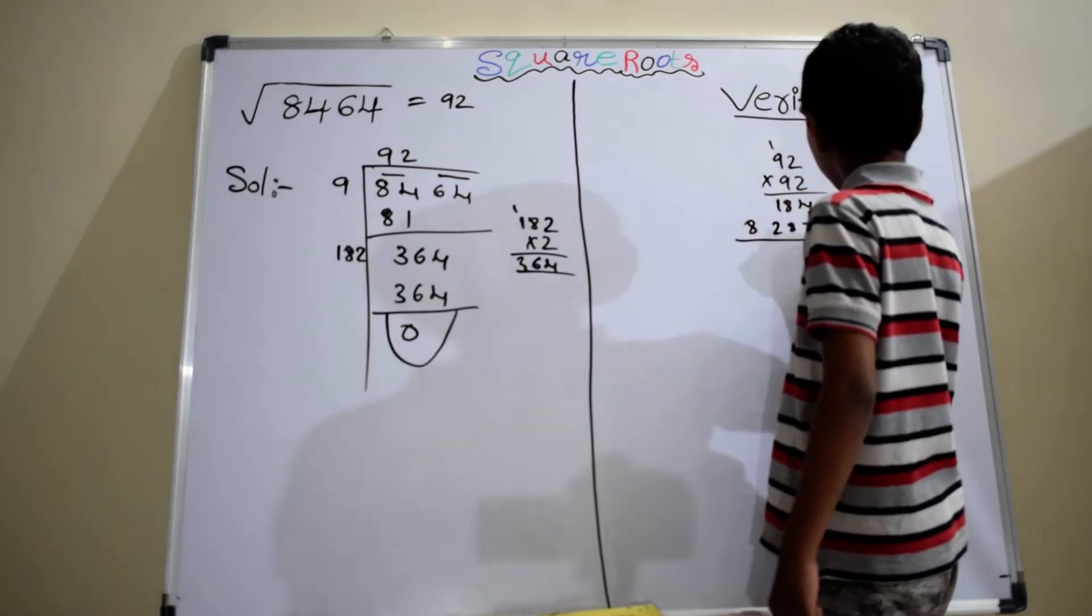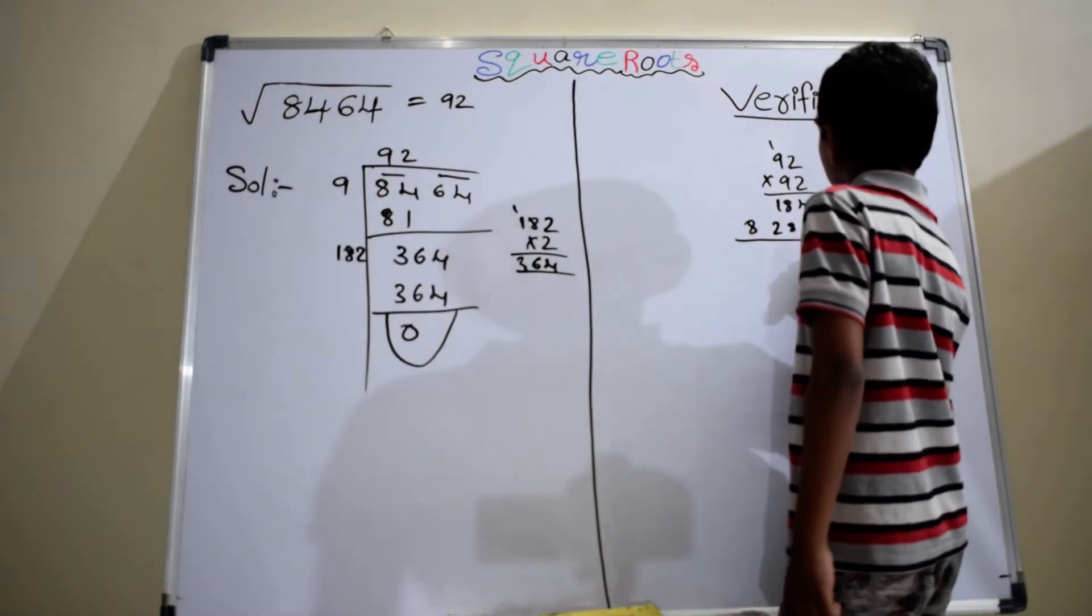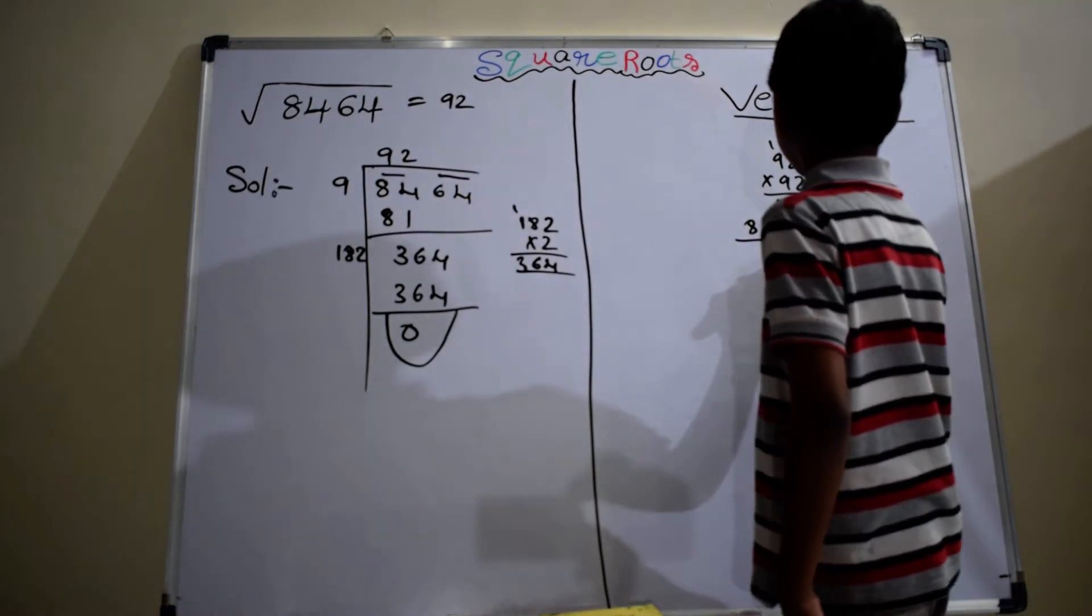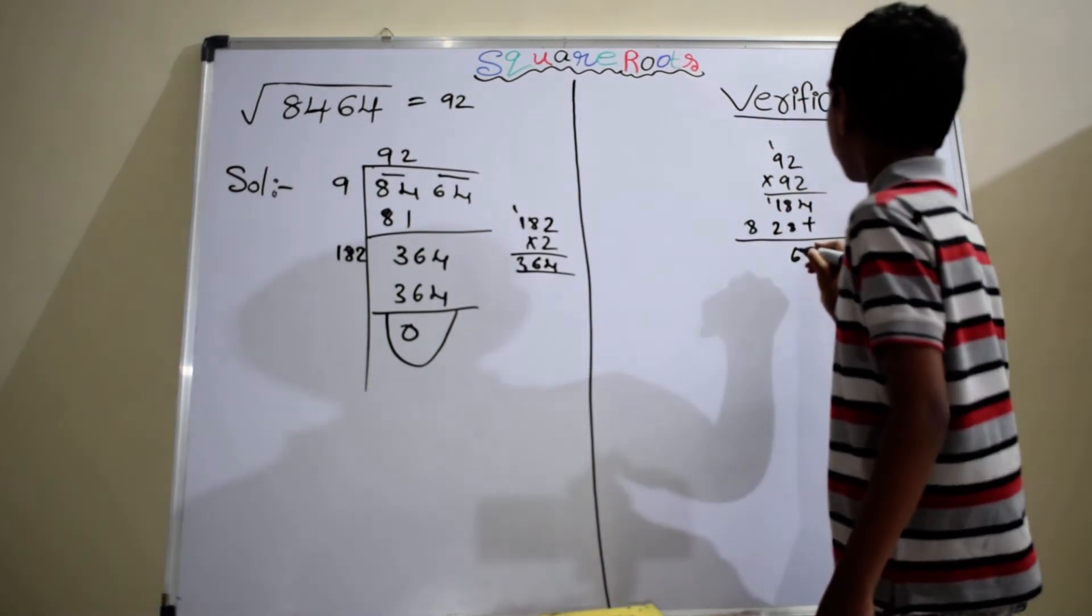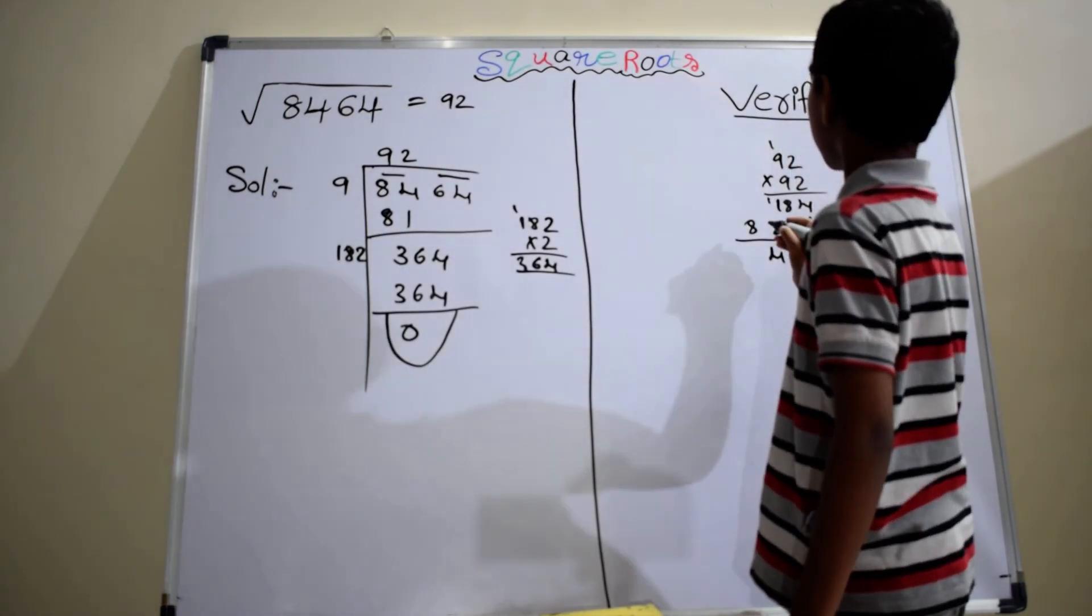Now, we have to add 184 plus 828. 4, 8 plus 8, 16, 1, 2 plus 1, 3 plus 1, 4, 4, 8.